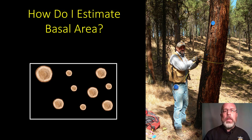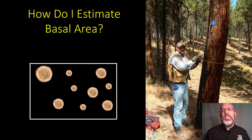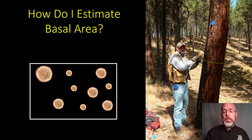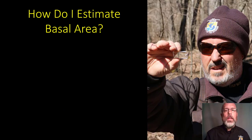So how do I estimate basal area? That's our topic today. We could go out and measure the diameter of all these trees at the four and a half foot mark, estimate the basal area that way, and add them all up. But we want a quicker method, since we're more interested in stream restoration than forest ecology and we're already doing all other kinds of measurements. So what we want to use is a cruise prism.